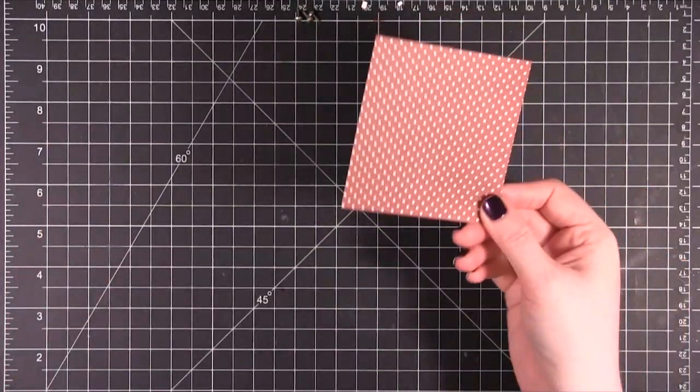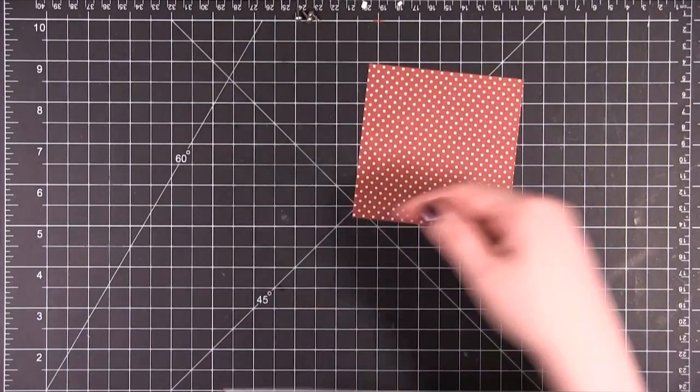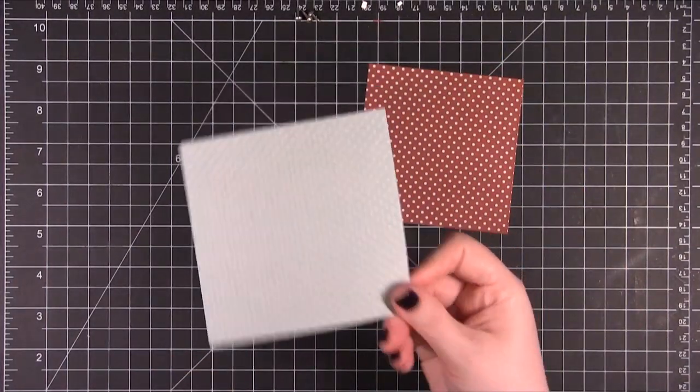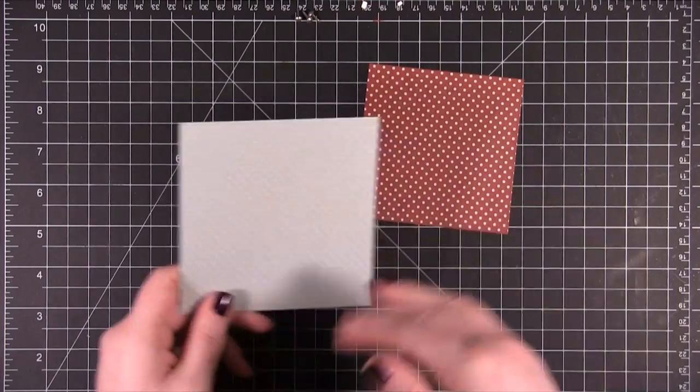I started with a square that's 3 3/4 wide by 3 3/4 tall and this one is 4 1/2 tall and 4 1/2 wide, so exact squares.